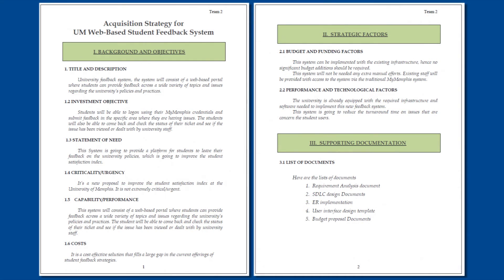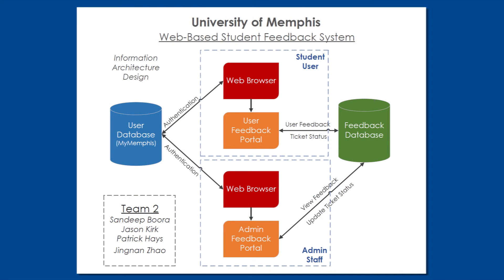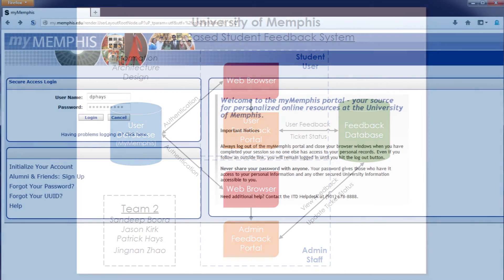Our group then created an acquisition strategy that detailed the specific benefits and hurdles to implementing the student feedback system. Finally, an architecture design diagram was created to help further elaborate our perspective of the system. This helps elaborate how the components of the system will work together. The last step of the design phase was to create a user interface design prototype. Let's take a look at this prototype now.